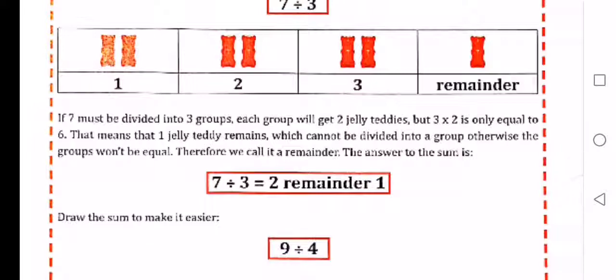If 7 must be divided into 3 groups, each group will get 2 jelly teddies, but 3 times 2 is only equal to 6. That means that 1 jelly teddy remains, which cannot be divided into a group, otherwise the groups won't be equal. Therefore, we will call it a remainder. The answer to the sum is 7 divided by 3 equals 2, remainder 1.